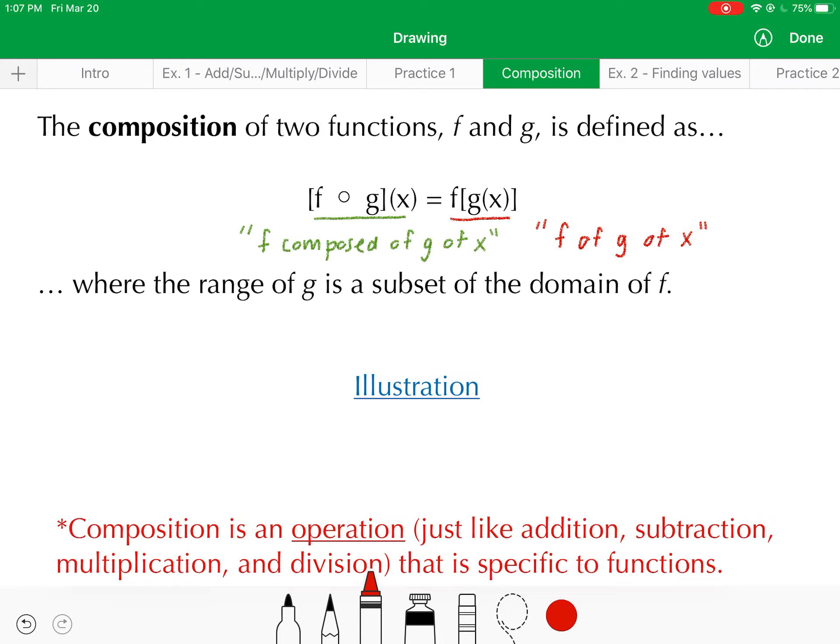Or you could say f evaluated at g of x. If you have a really good understanding of function notation, finding the composition between two functions shouldn't be that bad. Basically, all you're doing is evaluating one function with another function. In this case, we're evaluating the function f with the function g.